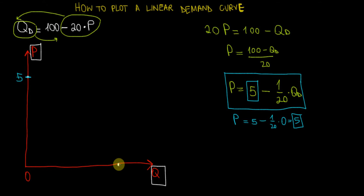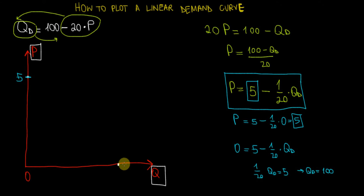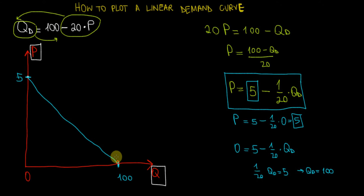Now, what is the intercept on the quantity axis? We use similar logic: when price is zero, what is the maximum quantity demanded? Setting price equal to zero: 0 equals 5 minus 1 over 20 times quantity demanded. Solving, 1 over 20 times QD equals 5, so quantity demanded equals 100. Therefore, over here we will have 100. If we connect these two points, we will have our linear demand curve.